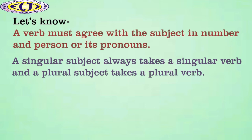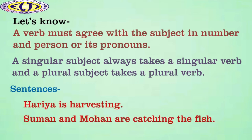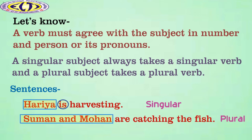Now, here we can correct the sentences above. Hariya is harvesting. Suman and Mohan are catching the fish. In the first sentence, the subject Hariya is singular, so it takes a singular verb 'is'. And in the second sentence, the subject is plural, so it takes a plural verb 'are'.